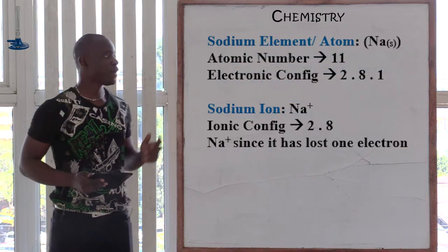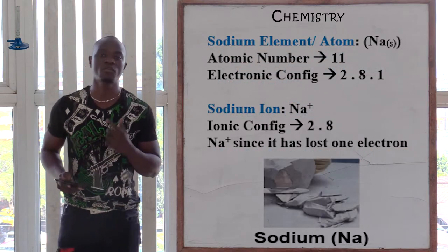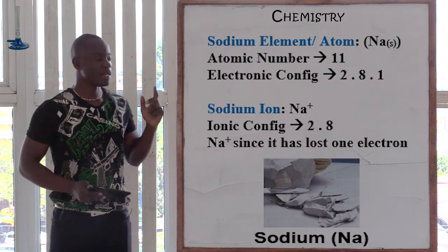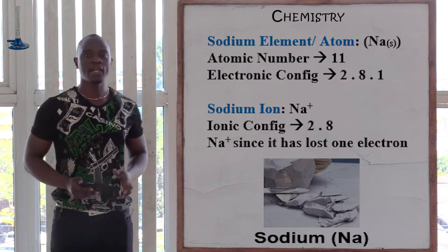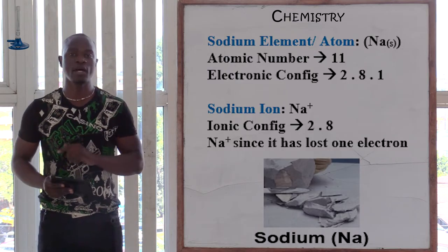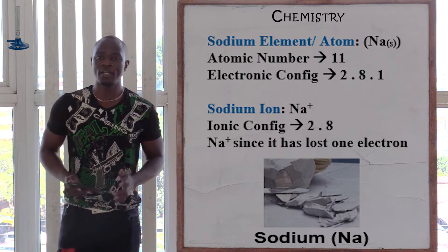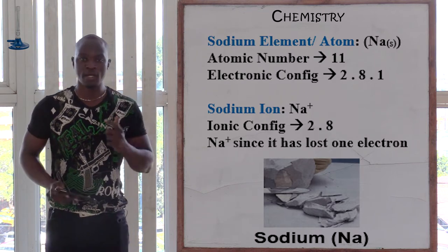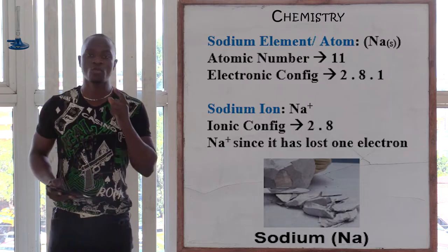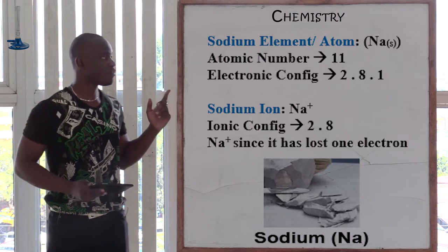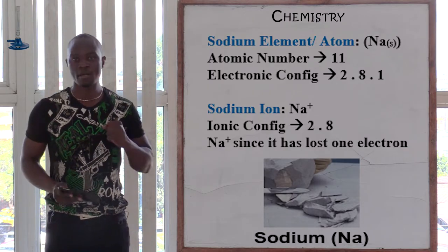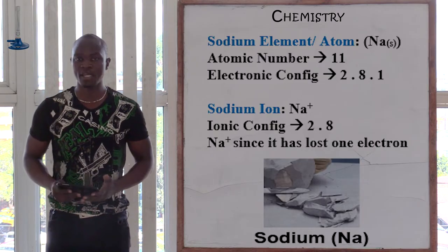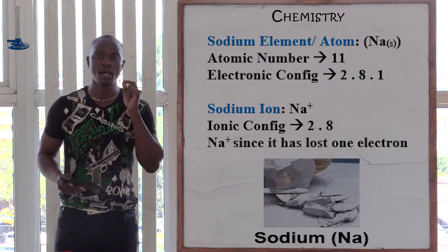Let's take for example sodium element, whereby the chemical symbol of sodium is Na. The state symbol is solid. The electronic configuration of sodium is always 2,8,1 because the atomic number of sodium is always 11. Since the electronic configuration is 2,8,1, this means that sodium is going to lose that one electron in the outermost energy level in order to become stable, and therefore it becomes a sodium ion.